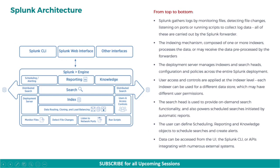How does this flow and architecture work? From top to bottom, Splunk gathers logs by monitoring files, detecting file changes, listening on ports or running scripts to collect log data. All of these are carried out by the Splunk forwarder. The indexing mechanism, composed of one or more indexers, processes the data, or may receive the data pre-processed by the forwarders. The deployment server manages indexers and search heads, configuration and policies across the entire Splunk deployment. User access and controls are applied at the indexer level; each indexer can be used for a different data store, which may have different user permissions. The search head provides on-demand search functionality, and also powers scheduled searches initiated by automatic reports. The user can define scheduling, reporting, and knowledge objects to schedule searches and create alerts. Data can be accessed from the UI, the Splunk CLI, or APIs integrating with numerous external systems.